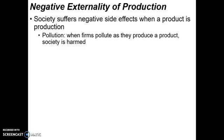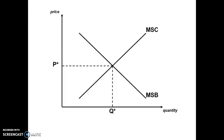Now let's look at the production side. Society suffers negative side effects when a product is produced — that's called the negative externality of production. A bad side effect comes from the production process itself, and pollution is definitely the best example. Any time firms create a product and in the process they pollute, that's a negative externality of production. One example: electronic companies in China that polluted the local river while producing their products — a negative side effect for society from production.